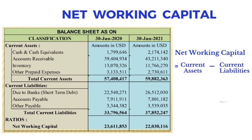In this example, we have US$57,408,417 worth of current assets, from which we deduct US$33,796,564 worth of current liabilities, arriving at US$23,611,853 worth of net working capital as of 30th June 2020.